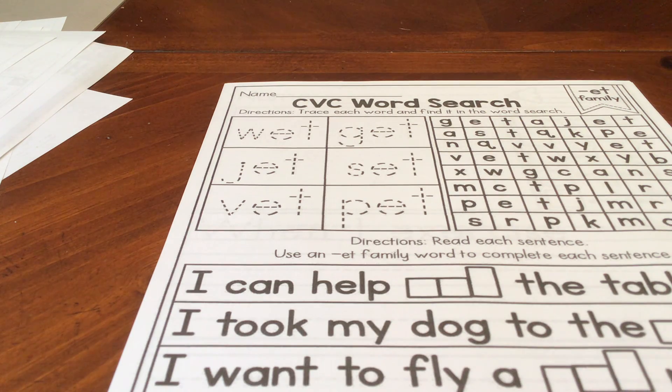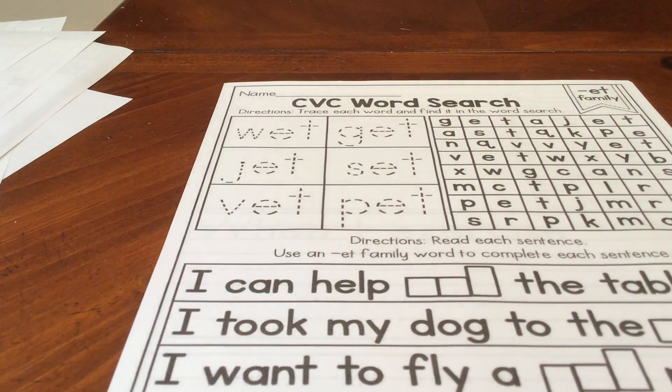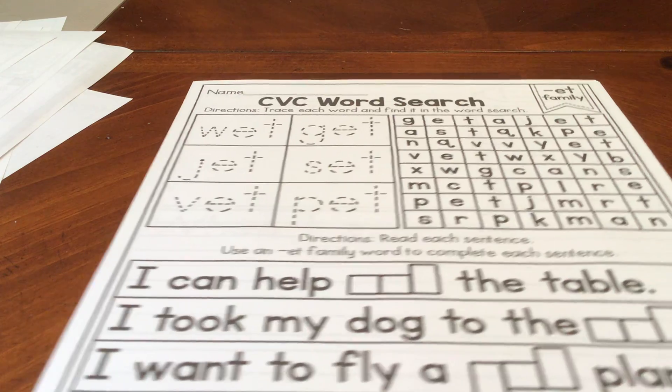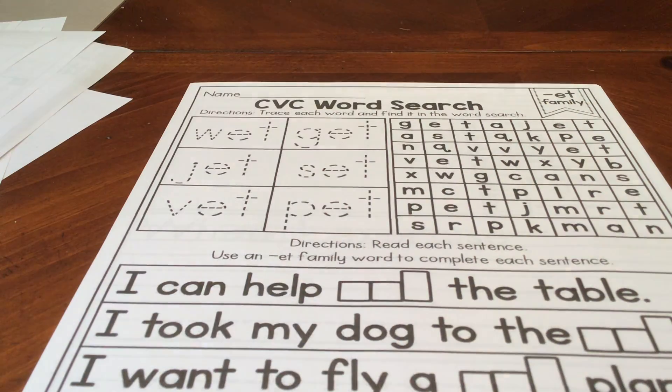All right, our next page is a word search. We're looking for words. They're going to be hidden up here in this big old jumble of letters. Got to find them. We're going to need a light color or a pencil to do that part with so that we can mark them and still see our letters.